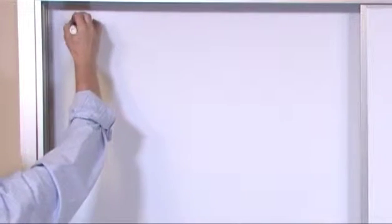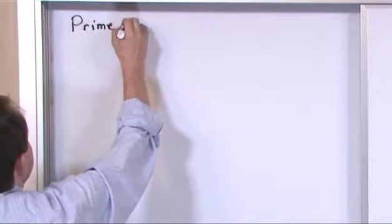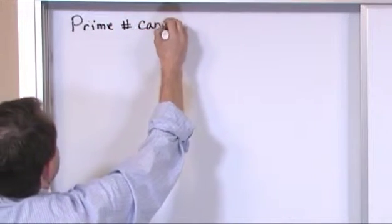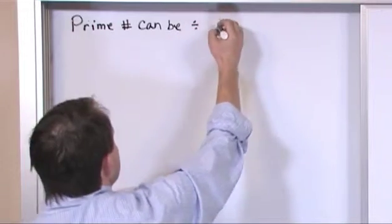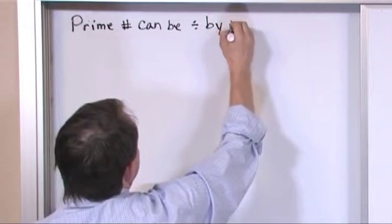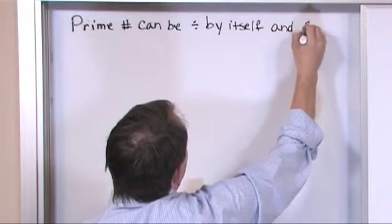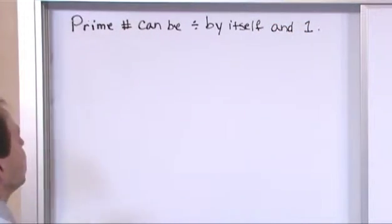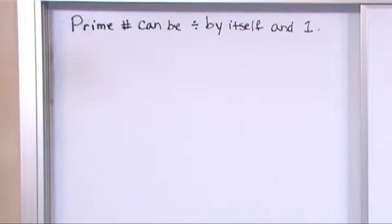We want to first recall that a prime number can be divided by itself and the number one. If a number can be divisible by itself and only the number one with nothing else that can be divisible and go into that number then it's called a prime number.